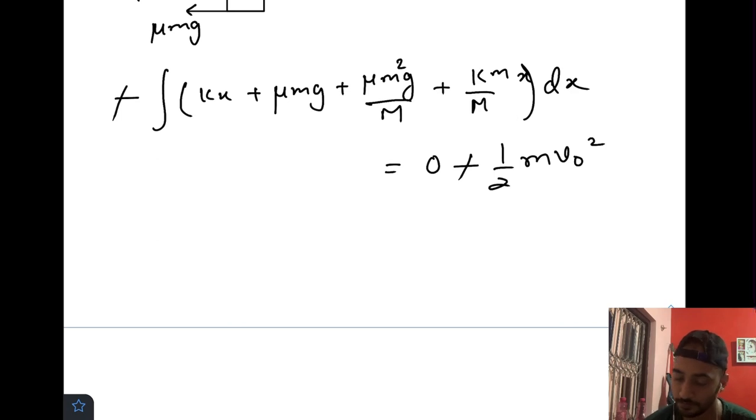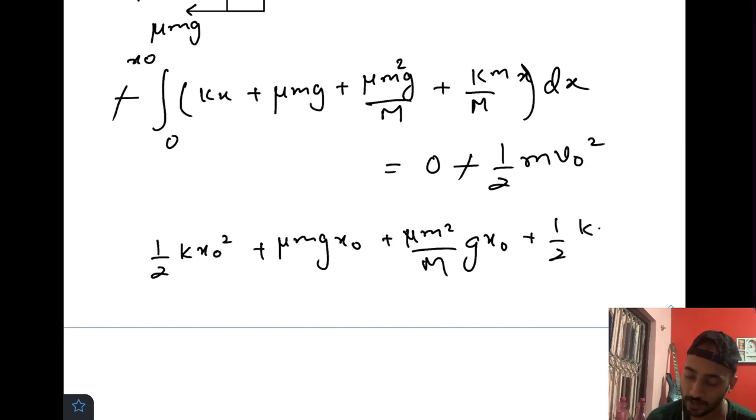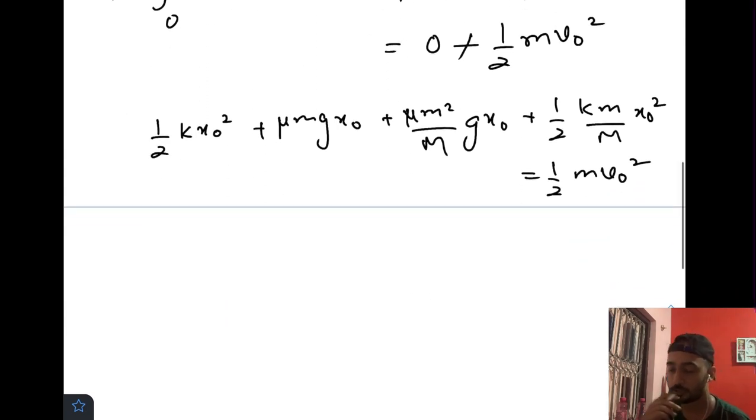The limit goes from 0 to x₀. We get (½)kx₀² + μmgx₀ + μm²g x₀/M + (½)k(m/M)x₀² = (½)mv₀². As you can see there are two unknowns: one is x₀ and one is v₀. We need to find v₀, so we need to replace x₀.